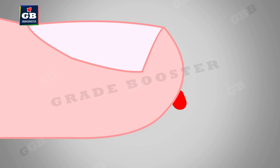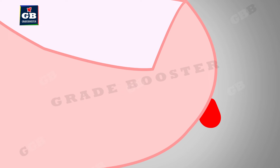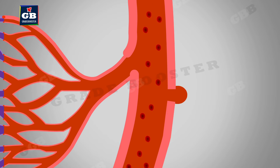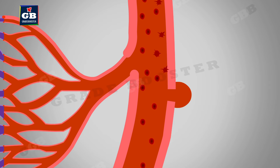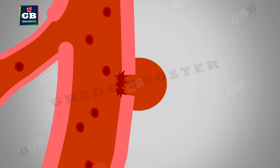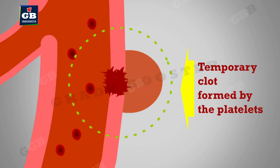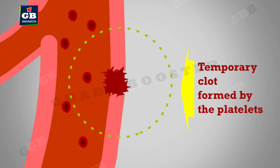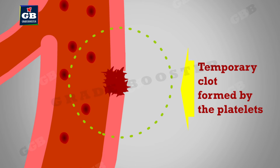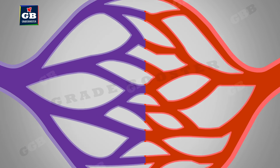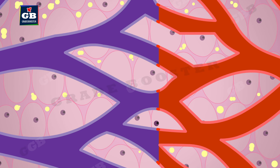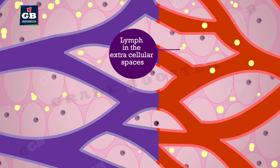there will be leakage and loss of blood from the body. To prevent this, platelets present in the blood migrate to the site of leakage and plug it temporarily. Later, a series of events takes place and permanent clotting of blood takes place.